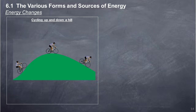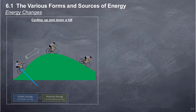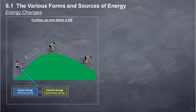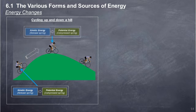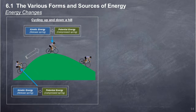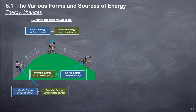Cycling up and down a hill: When cycling on flat land, kinetic energy is at maximum and potential energy is zero. When cycling uphill, the cyclist slows down — kinetic energy is lost and changes to potential energy. At the top of the hill, if the cyclist stops, all kinetic energy changes to potential energy. When going downhill, potential energy starts to change back to kinetic energy. When the cyclist reaches flat land again, all potential energy changes back to kinetic energy.